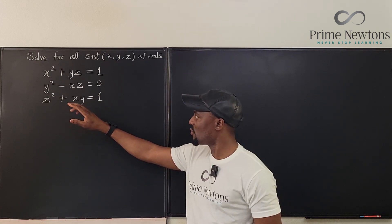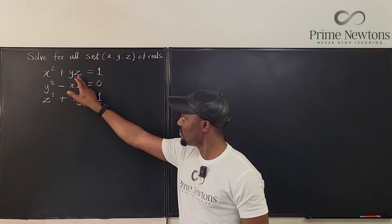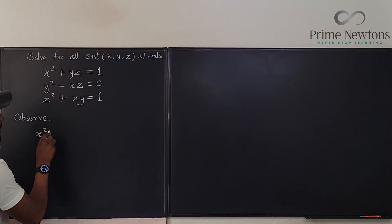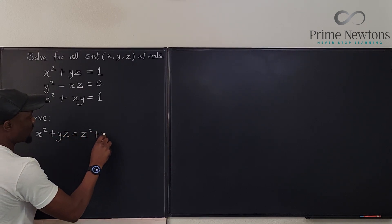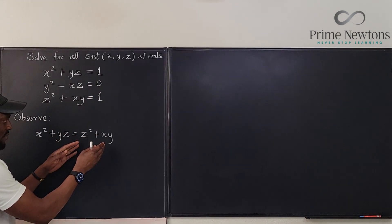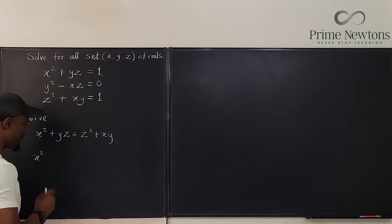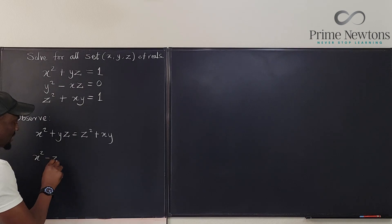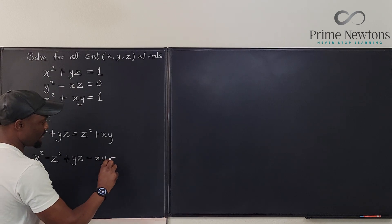Because the first equation is equal to 1 and the third equation also equals 1, these two must be equal to each other. So I just said that x squared plus yz is equal to z squared plus xy, because they're both equal to 1. With that, I can subtract — x squared minus z squared plus yz minus xy will be equal to 0.